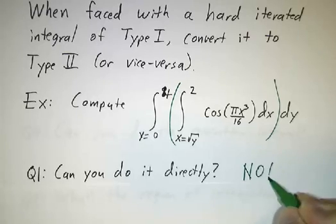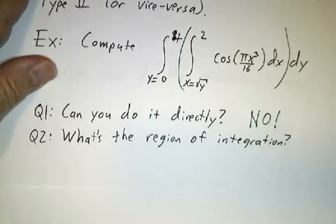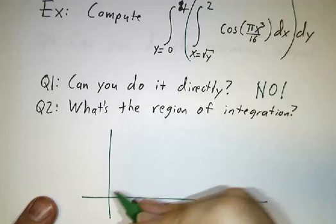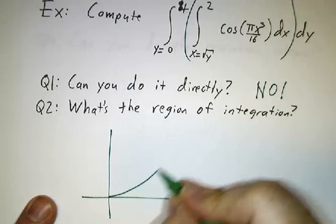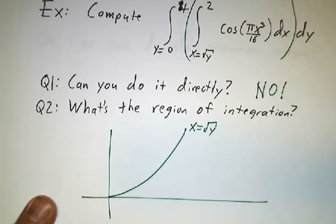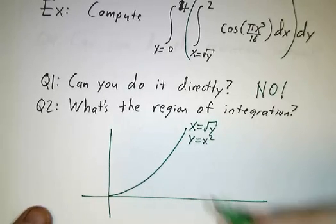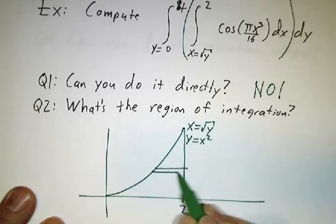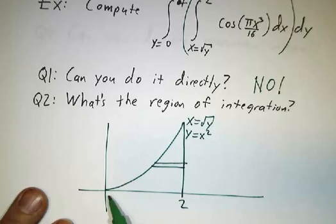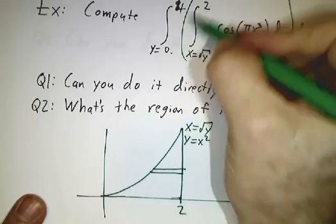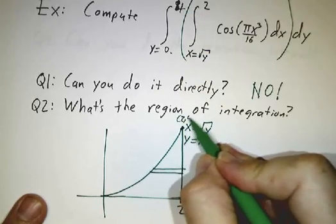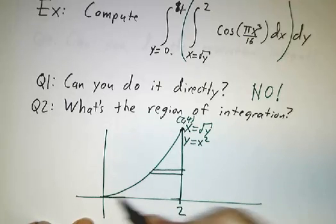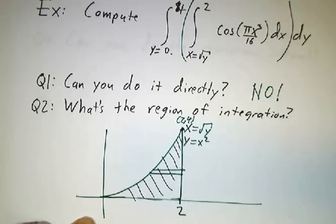Instead, we're going to draw a picture of the region of integration. We are integrating as x goes from square root of y — that is, x equals square root of y, which is another way of saying y equals x squared — up to x equals 2. So each row goes from x equals square root of y to 2. The lowest row is at y equals 0 and the top row is at y equals 4. So our region is everything between the parabola y equals x squared, the vertical line x equals 2, and the horizontal line y equals 0. Can we rewrite that as a Type 1 integral? Sure.